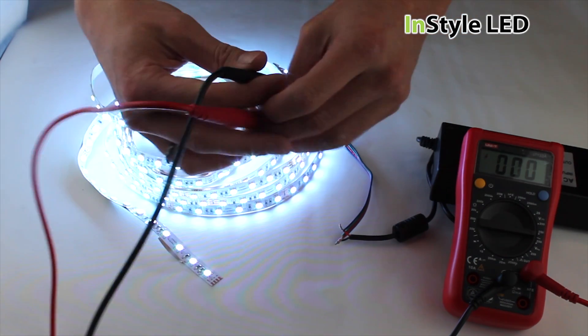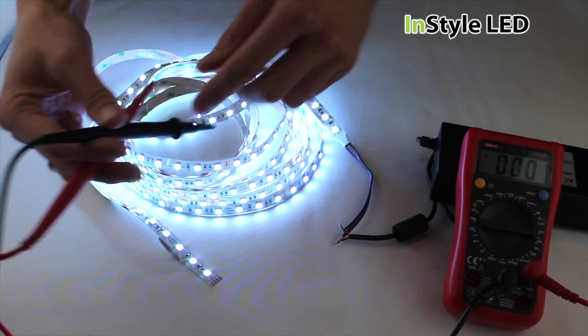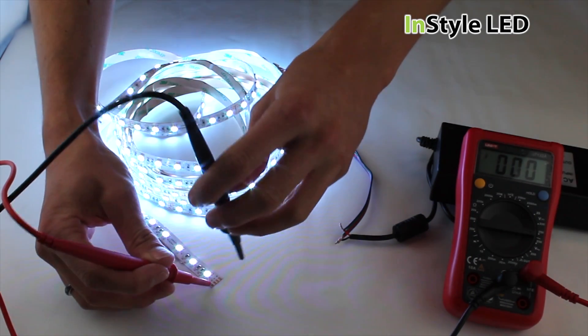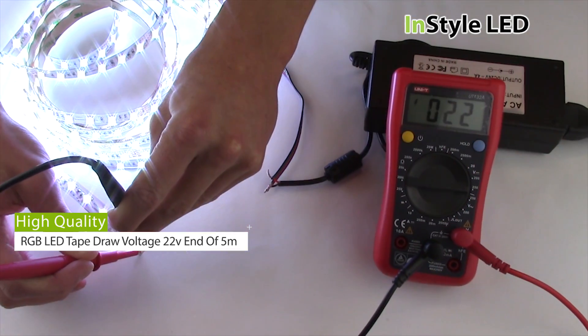The high quality LED strip will show 24V at the start of the reel. And towards the end of the reel it is still showing 22V. This means a voltage drop of around 8%.